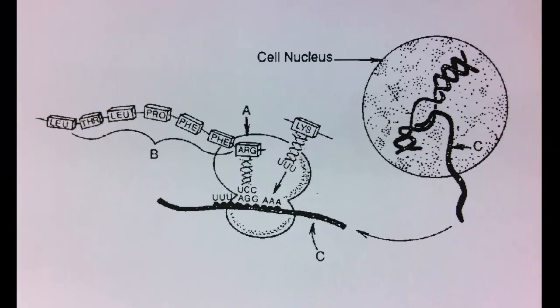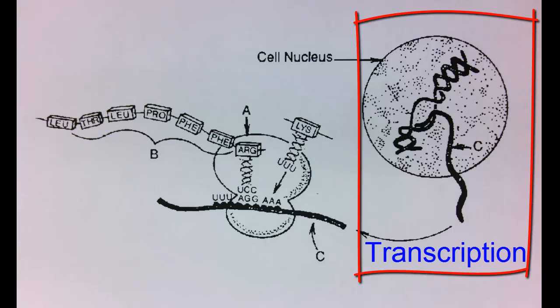This seems complicated, but just focus on the big picture. Transcription occurs first in the nucleus, where the information in a gene is copied into a messenger RNA molecule. This messenger RNA molecule leaves the nucleus through a nuclear pore and goes to the cytoplasm to a ribosome.